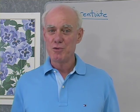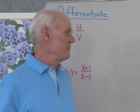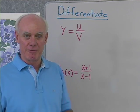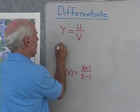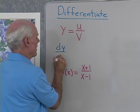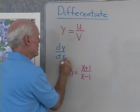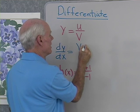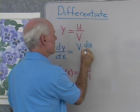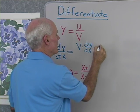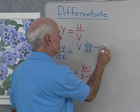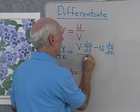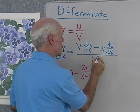I want to take a look at the quotient rule for derivatives. Here I have y is equal to u divided by v, where u and v are functions of x. The quotient rule tells us that the derivative of y with respect to x is going to be v times du/dx minus u times dv/dx, all divided by v squared.